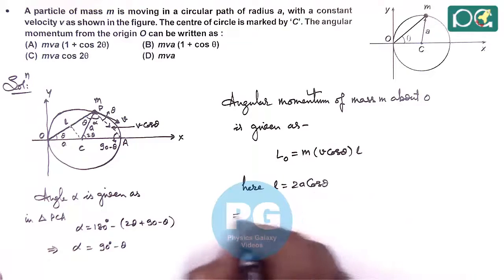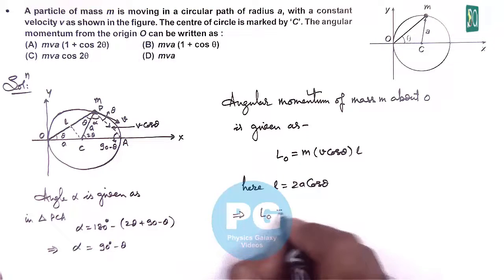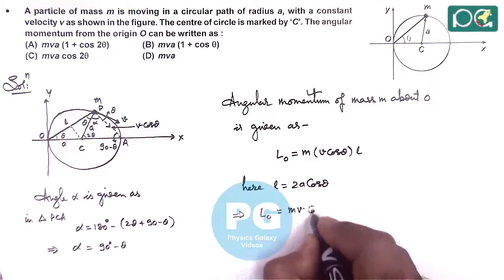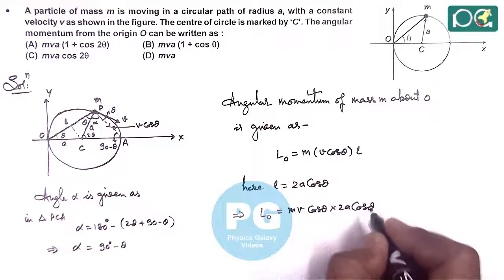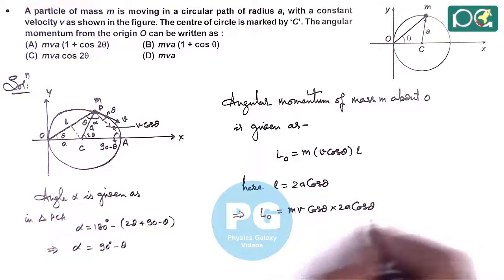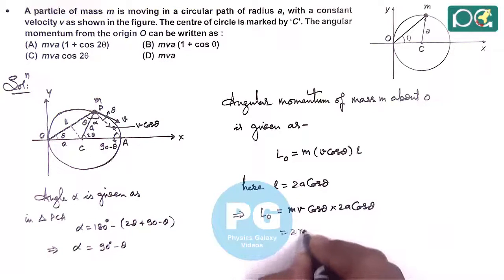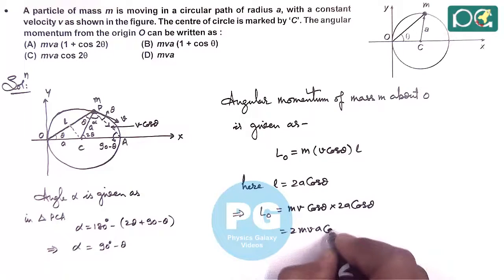This implies angular momentum about O is written as M V cos theta multiplied by 2A cos theta, which is giving us 2MVA cos square theta.